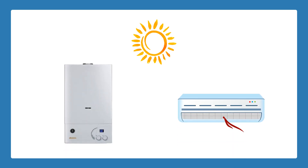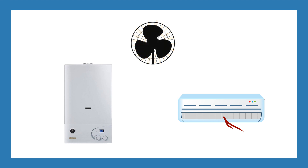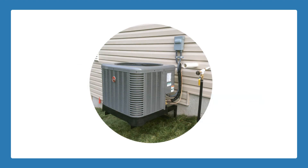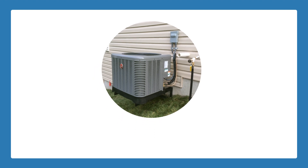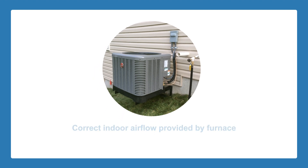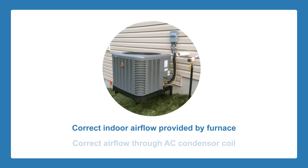During the summer, when the temperature in your home rises above the air conditioning set point, it sends a signal bringing on both the air conditioner and the furnace blower. The outdoor AC unit houses a compressor which pumps refrigerant to an evaporator coil located inside near the furnace. Proper functioning of your central air conditioner depends upon the correct indoor airflow provided by the furnace and correct airflow through the AC condenser coil in order to keep the compressor running properly.